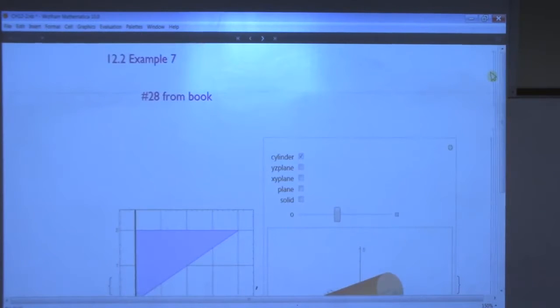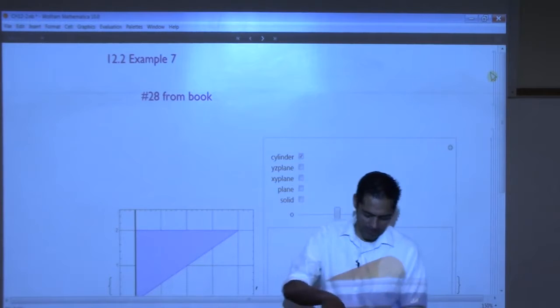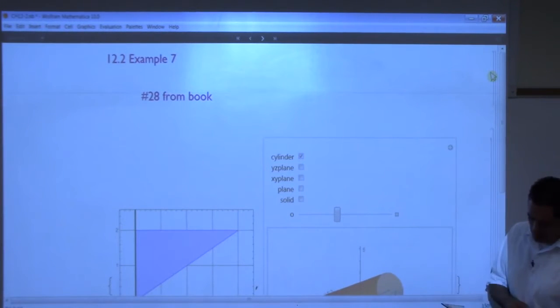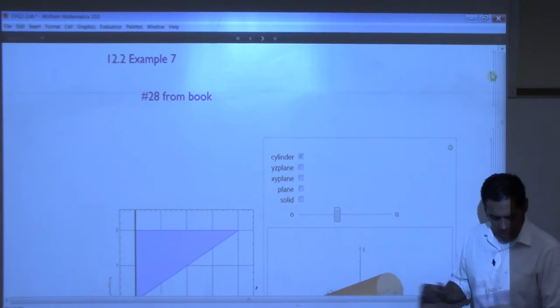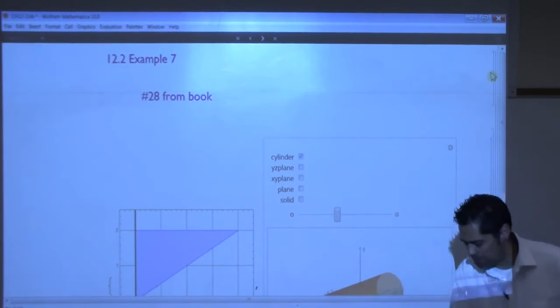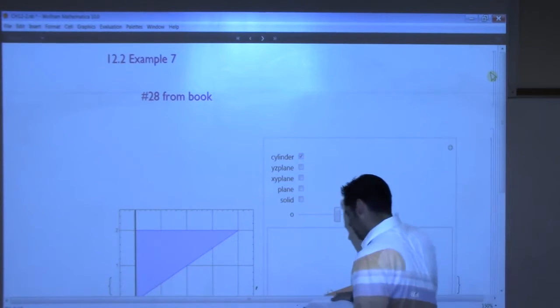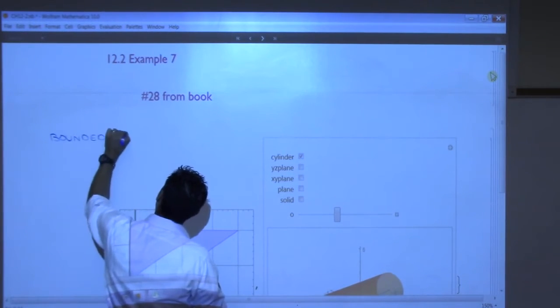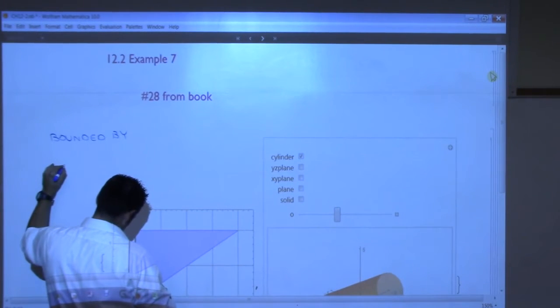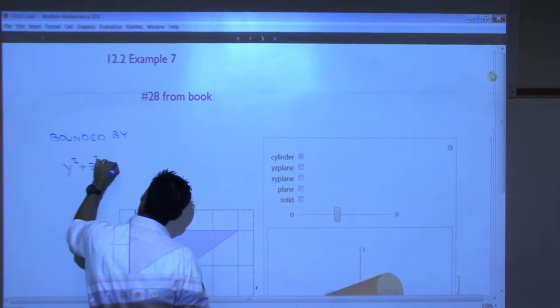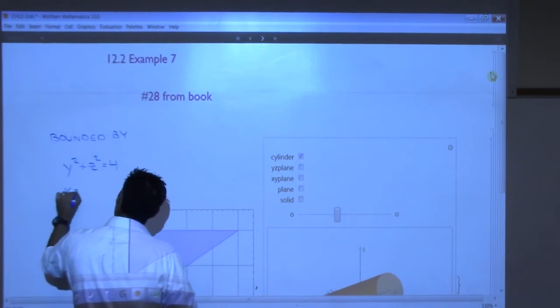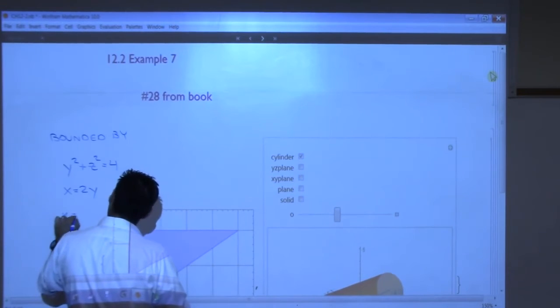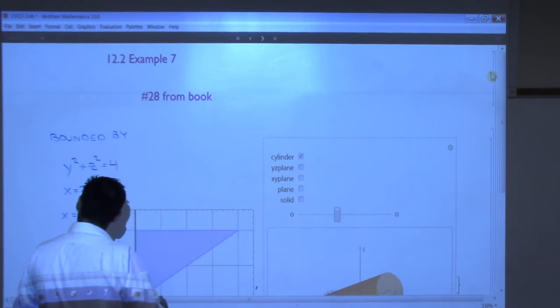All right, this is a tough problem. We have 15 minutes. How many people have books? Is there like one book per table? I want you to look at number 28 from the book. This is on page 708. I'll put all the information up here. But in 15 minutes, let's see what you can do about finding the volume of this solid. It's bounded by y squared plus z squared equals 4, x equals 2y, x equals 0, z equals 0, and it's in octant 1.